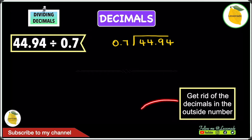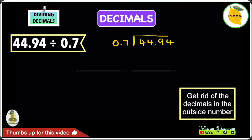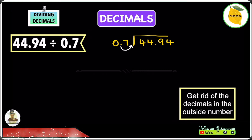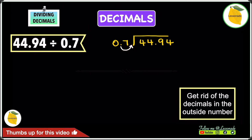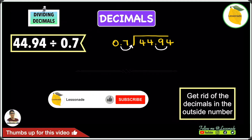The first thing you have to do is to get rid of the decimals in the outside number. The outside number is 0.7, so you have to get rid of the decimal in this number. The only thing you can do is to move the decimal point towards the right — in other words, multiply the outside number by 10. Because you're moving it one space towards the right in the outside number, you also have to move the decimal point in the inside number one space towards the right.